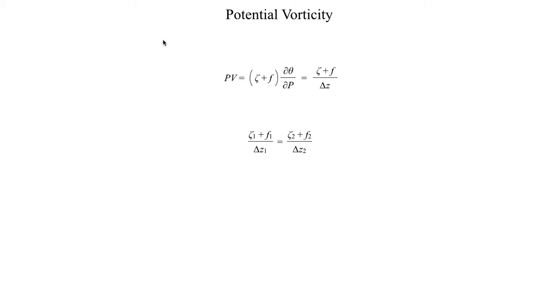Hello class, welcome to the final segment in lecture 15. In this final segment we're going to take the concept of potential vorticity that we introduced in the previous segment and see what that actually means for the atmosphere, and specifically what happens to our flow pattern as it goes from west to east over the Rockies. Let's go ahead and dive right into that, but first let's quickly review what we talked about when we introduced potential vorticity.